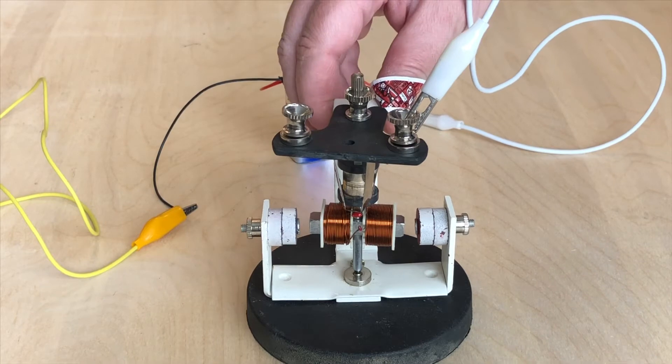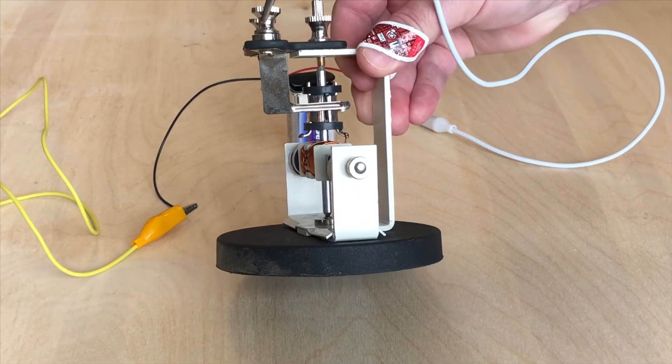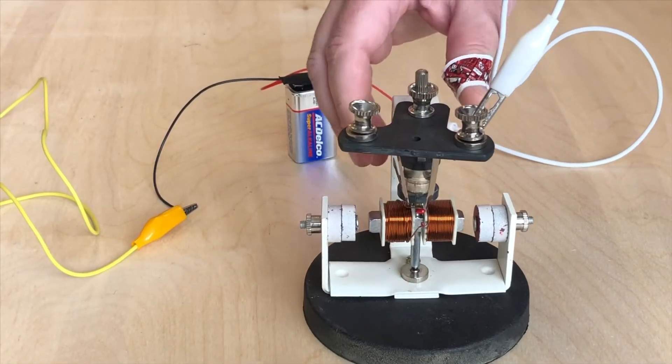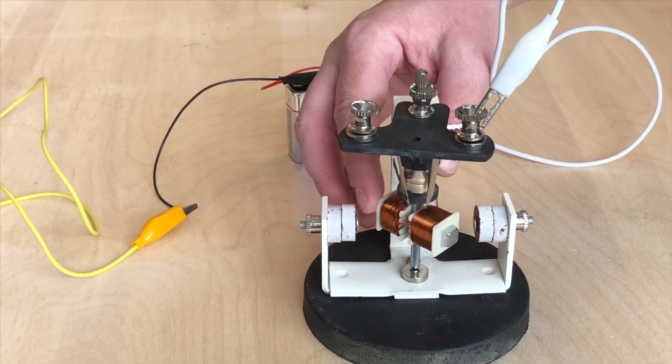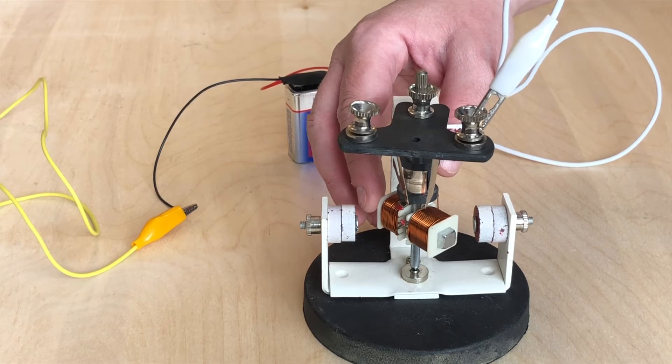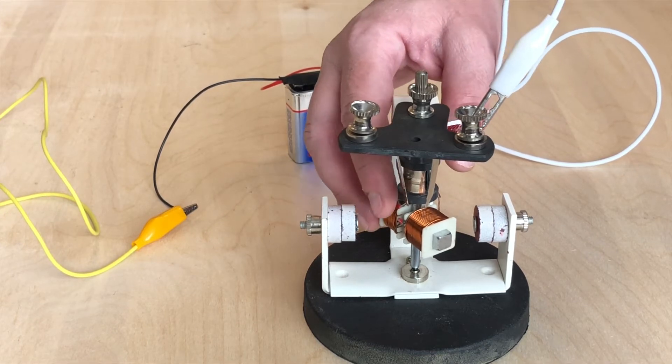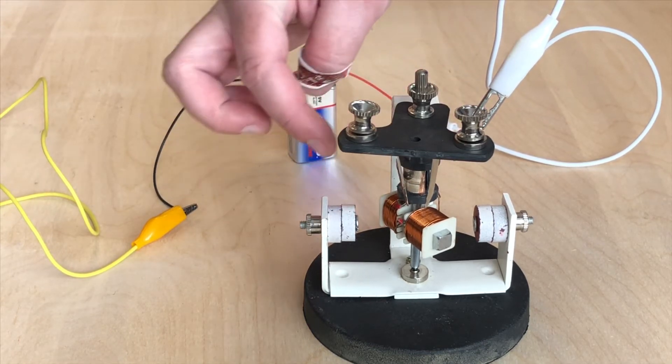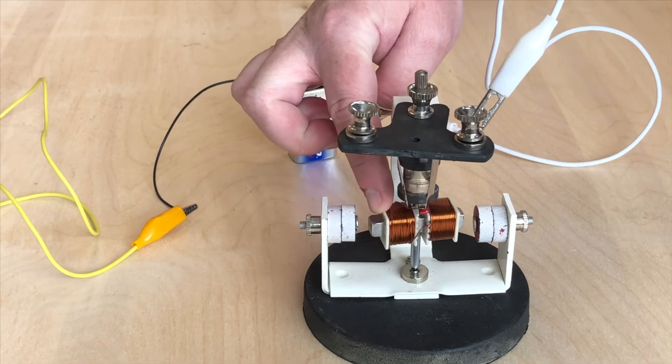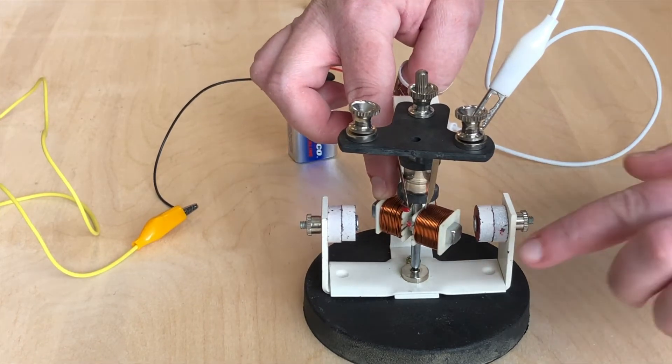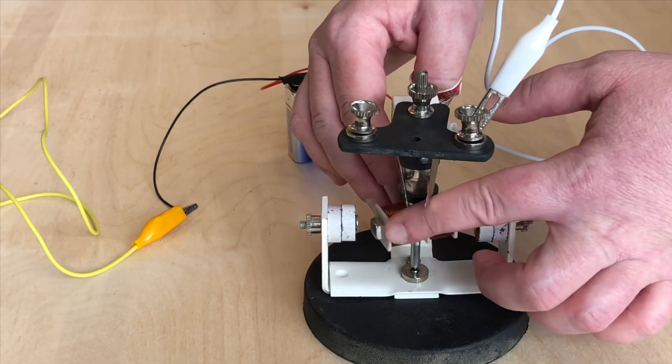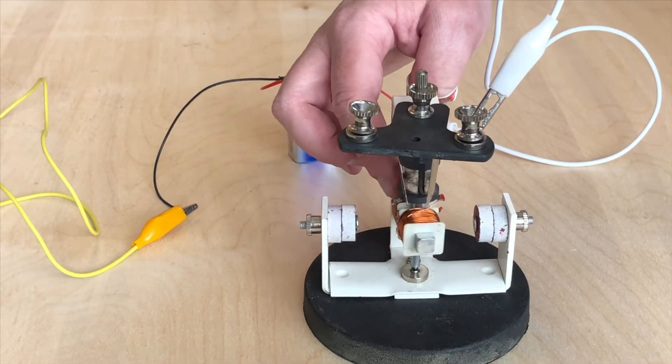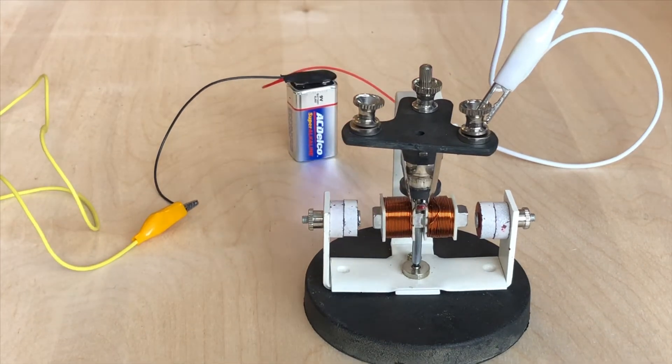But what you'll also notice is that is when the brushes encounter the split. So what happens is the current actually breaks and momentum carries it like this. This then reverses the polarity to the armature, now making this a north when it was a south and this a south when it was a north, and they're going to try to come back again. And this will continue over and over and over again.